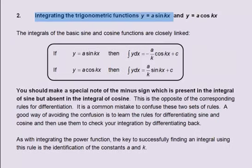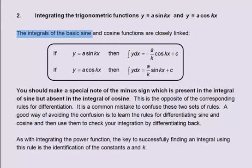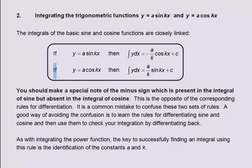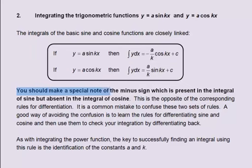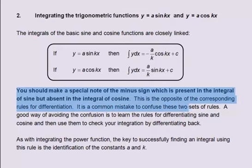2. Integrating the trigonometric functions y equals a sine kx and y equals a cos kx. The integrals of the basic sine and cosine functions are closely linked. If y equals a multiplied by the sine of kx, then the integral of y with respect to x equals minus a divided by k multiplied by the cosine of kx plus c. If y equals a multiplied by the cosine of kx, then the integral of y with respect to x equals a divided by k multiplied by the sine of kx plus c. You should make a special note of the minus sign which is present in the integral of sine, but is absent in the integral of cosine. This is the opposite of the corresponding rules for differentiation. It is a common mistake to confuse these two sets of rules.